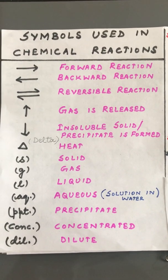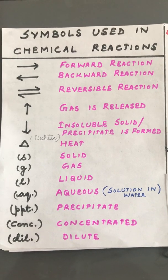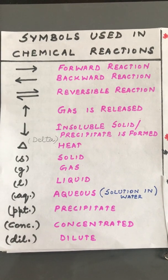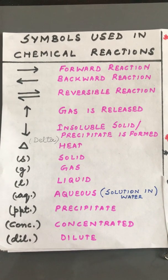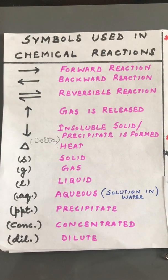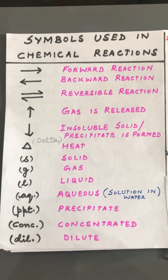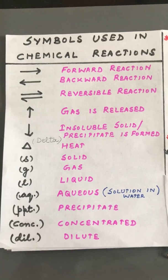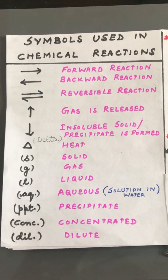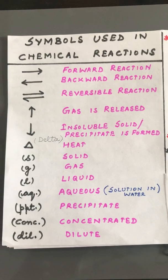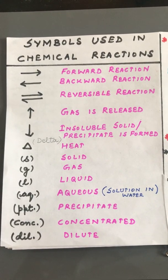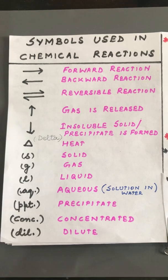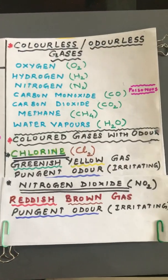Hello students, today we will discuss decomposition reactions. But before that, let us discuss the symbols used in chemical reactions: forward arrow for a forward reaction, backward arrow for a backward reaction, reversibility sign for a reversible reaction, upward arrow for a gas being released, downward arrow for an insoluble solid or precipitate being formed, delta sign for heat, 's' for solid, 'g' for gas, 'l' for liquid, 'aq' for aqueous — a solution in water, 'ppt' for precipitate, 'conc' for a concentrated solution — having less quantity of water.